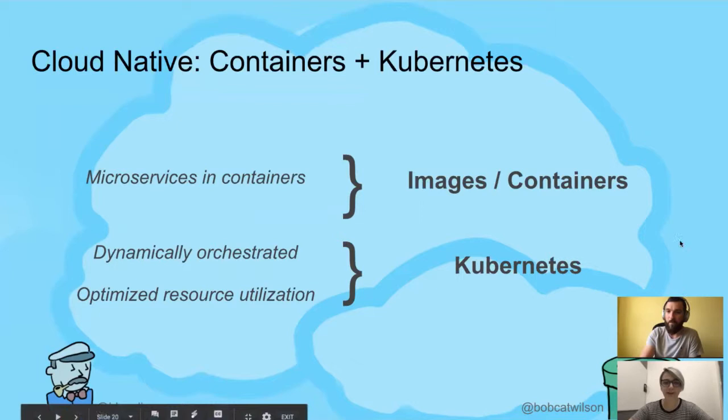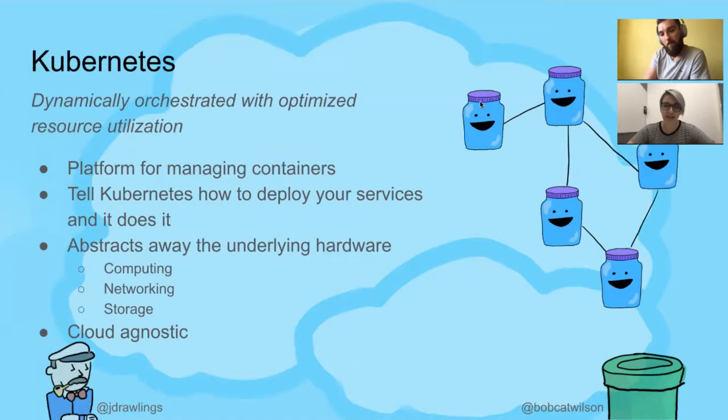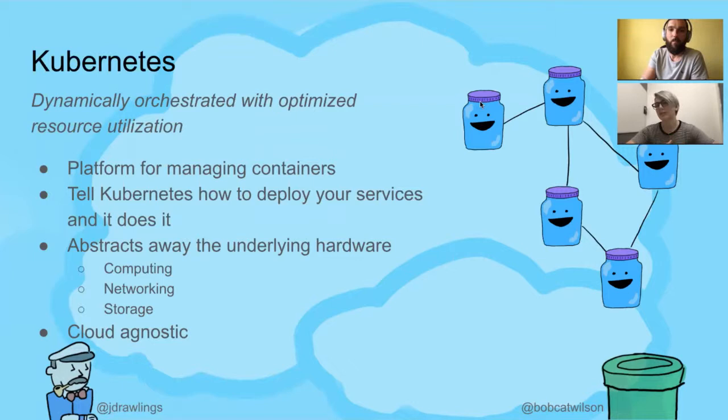That's where Kubernetes comes in. For a lot of us, this is what cloud-native ends up looking like. We use containers as our most basic building block, and then we use Kubernetes to add the dynamic orchestration of those containers and optimize resource utilization. With Kubernetes, you can tell it how your containers should be deployed — what services they need, what storage, etc. And if a machine running your container goes down, Kubernetes will schedule the container on a machine that's available.